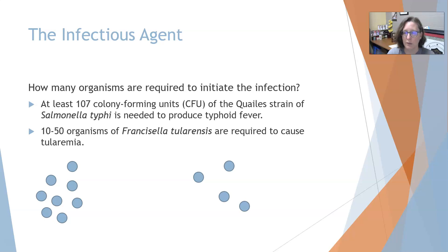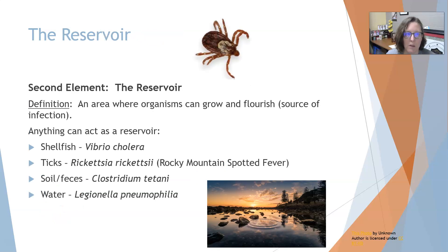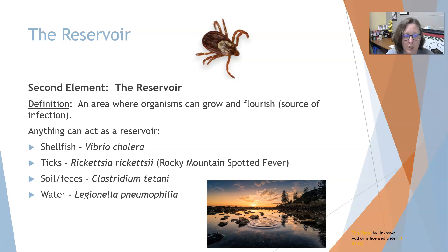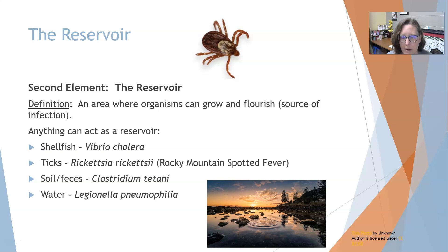The second element is the reservoir. A reservoir is an area where the organism can grow and flourish, and they are often a source of infection. Anything can act as a reservoir — for example, shellfish can host Vibrio cholerae in contaminated water, and ticks can harbor Rickettsia rickettsii, which causes Rocky Mountain spotted fever.